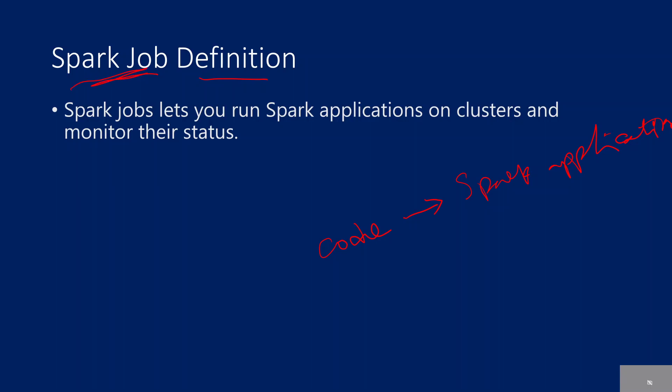Now, what is a Spark job? A Spark job is a process that will take this Spark application and execute it. You can think of it like a processor or a thread that will actually take this Spark program or Spark application that you have written and execute it on top of Spark.